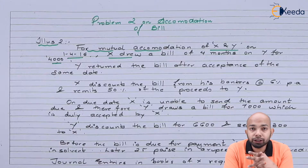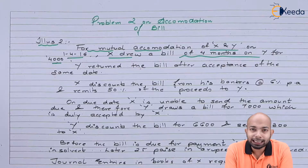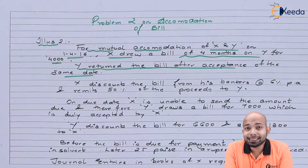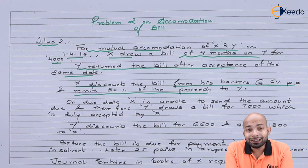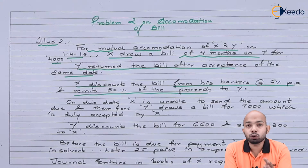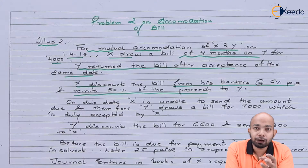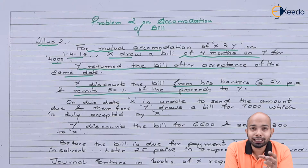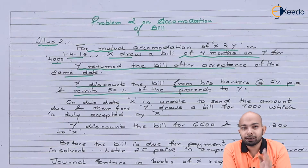X drew a bill on Y on 1st April 2016 worth Rs 4,000. Y accepted the bill and returned it to X on the same day. X discounted the bill with his banker at 6% discount and remits 50% of the proceeds to Y — that means, whatever amount he received after discounting, he sent half of the amount to Y.